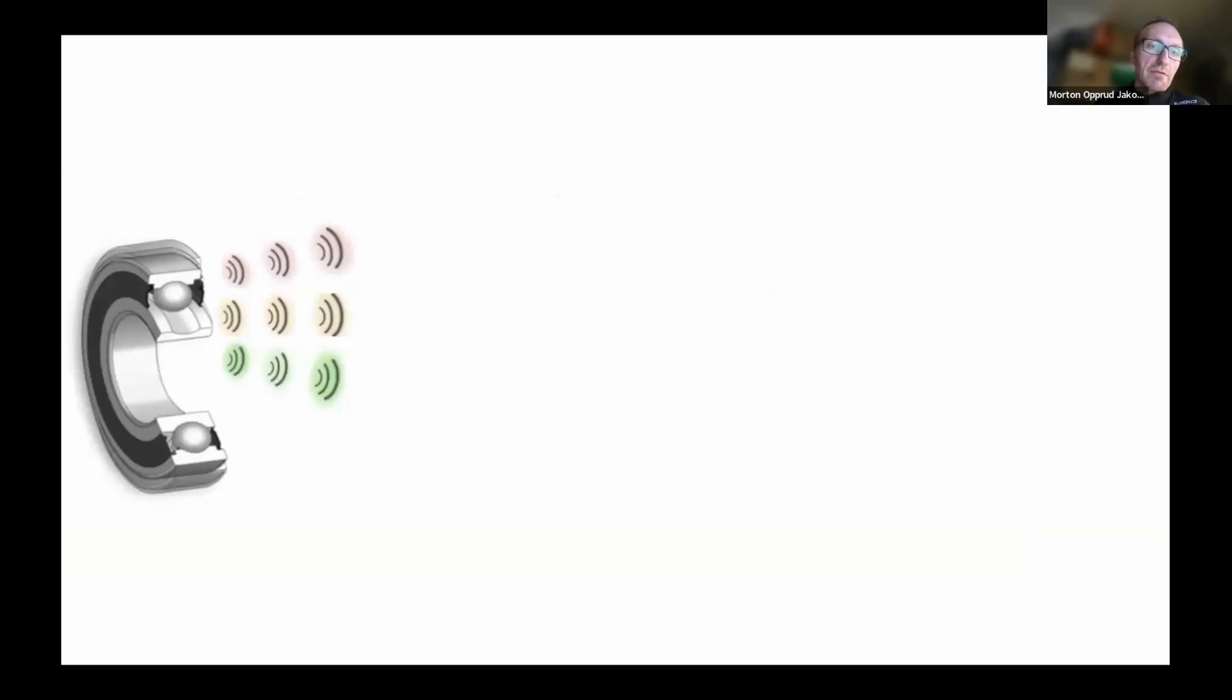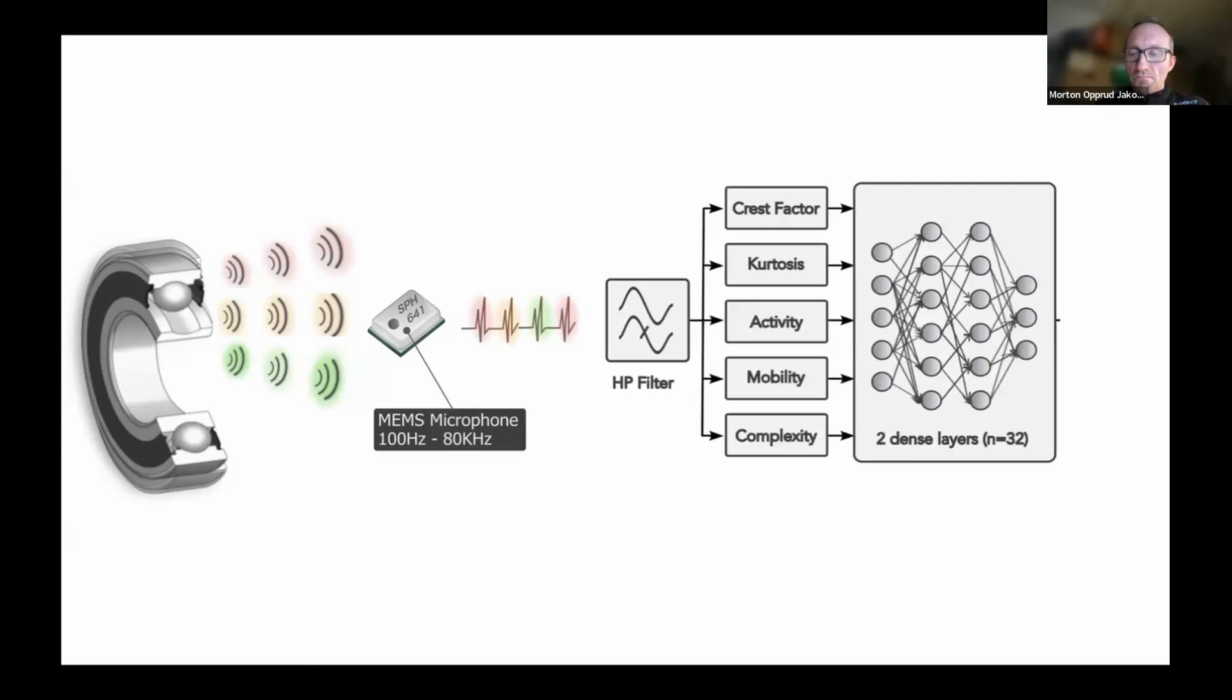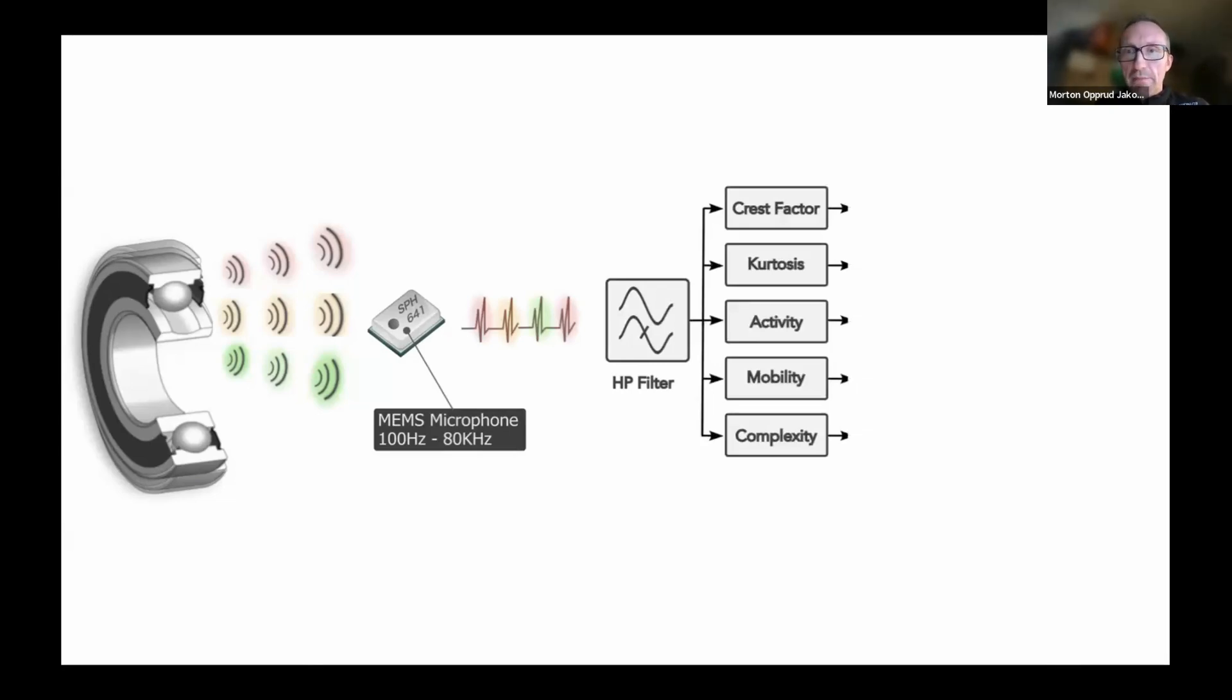So looking at the bearing we had before with different or varying lubrication conditions, how do we go along and capture some of these signals? Well, for the work I've been involved in, we built a prototype sensor with a MEMS microphone. In this case, it's capable of measuring, as also mentioned in one of the previous talks. It's capable of measuring outside the hearable range. It can capture from around 100 Hz to 80 kHz. The signal from the microphone is captured by a PDM and digitized, sent through a high-pass filter.